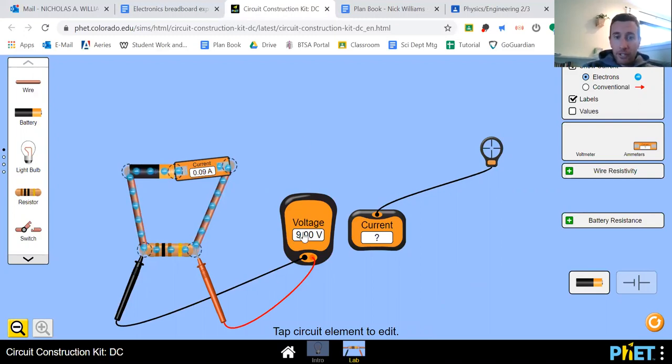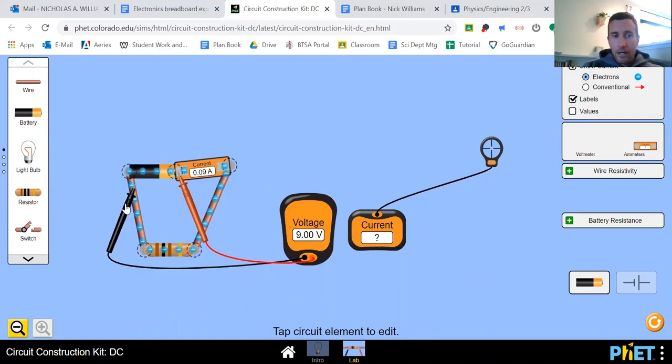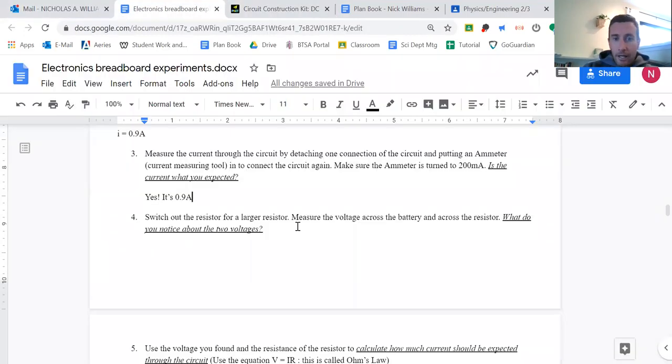And it asks me to measure my voltage. So my voltage across the resistor is nine volts. I can switch it up and move it up here and across the battery is nine volts. So I notice that the voltage across the battery and across the resistor are still the same, both nine volts.